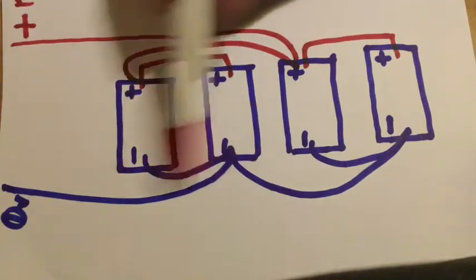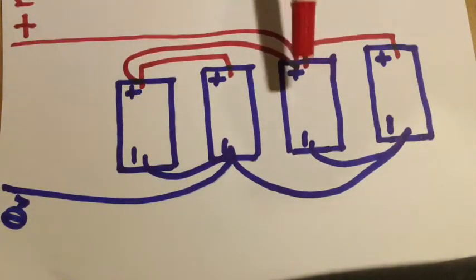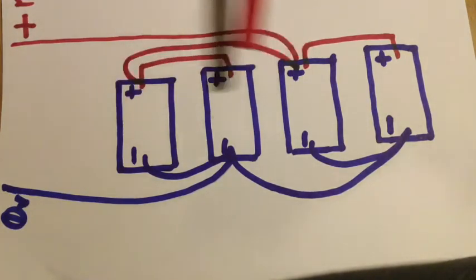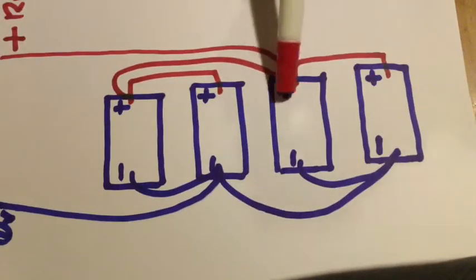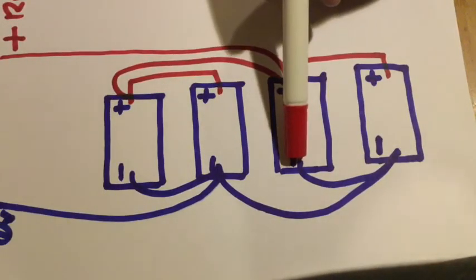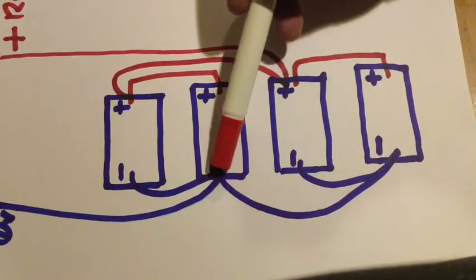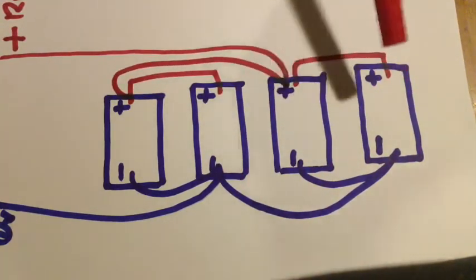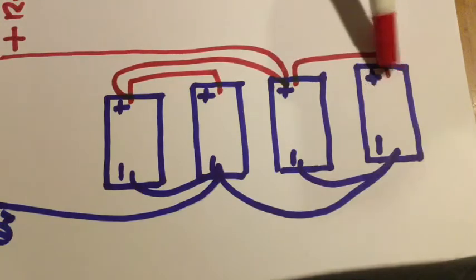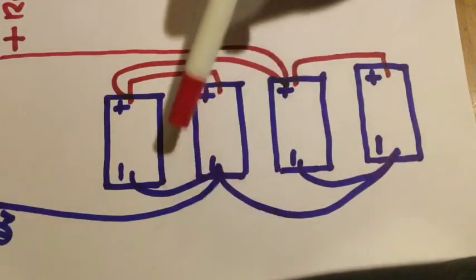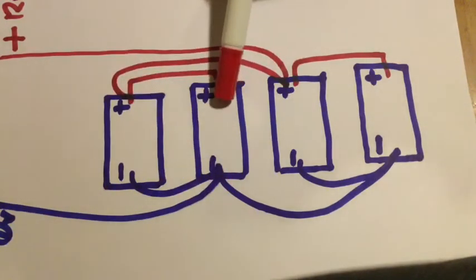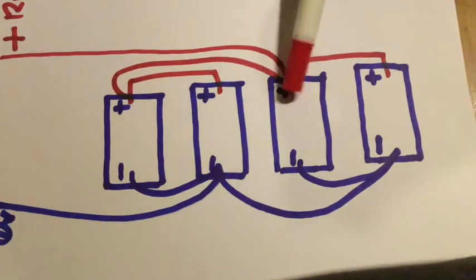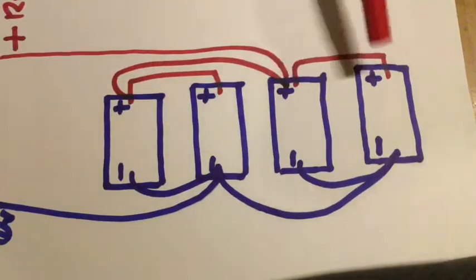This one here, the positive's connected directly, so the negative goes through one short and one long, same resistance. And if you look at the drawing, it's the same for all the batteries, one short, one long. They're all balanced equally, they'll all charge at the same rate.